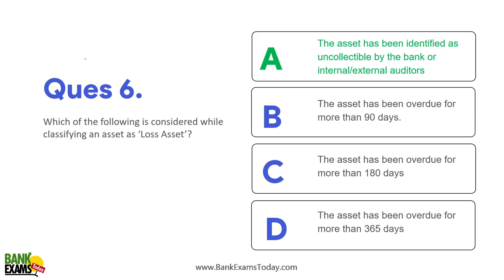Which of the following is considered a loss asset? A loss asset is one that has been identified as uncollectable by the bank or by internal/external auditors — the bank has accepted that this money is not going to come back.